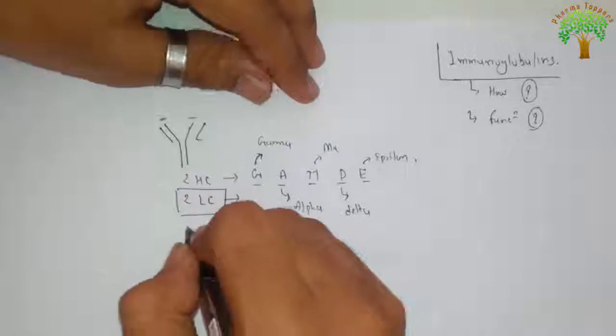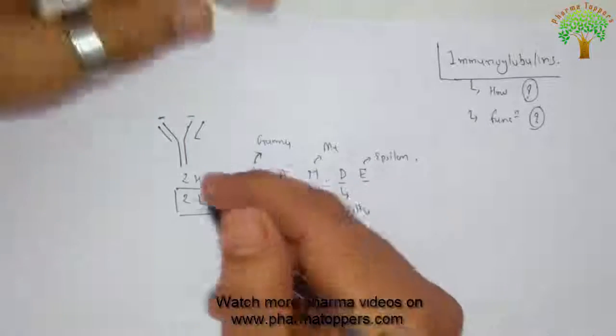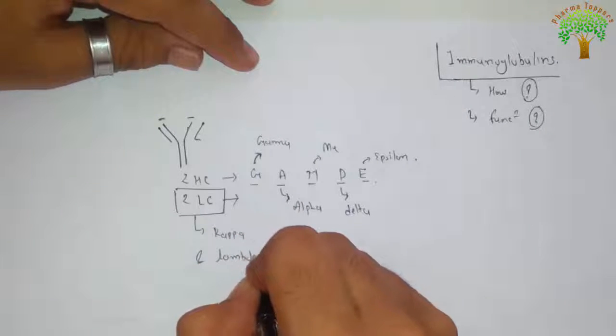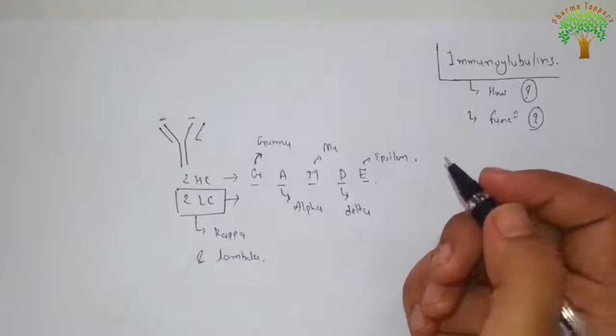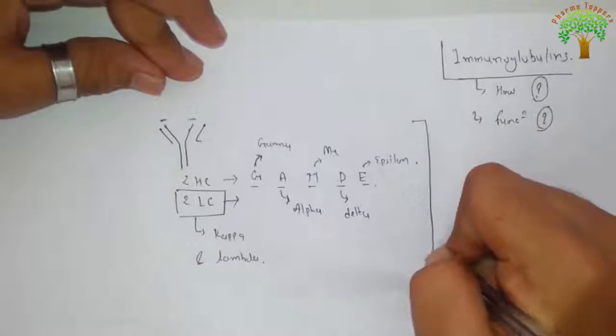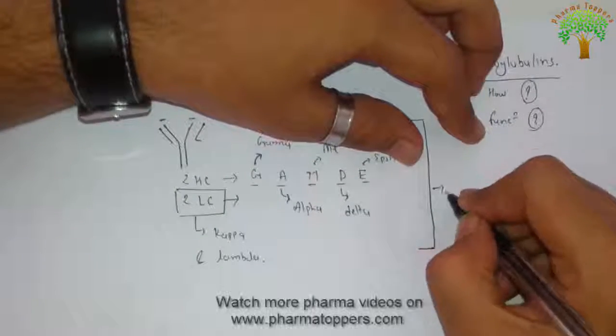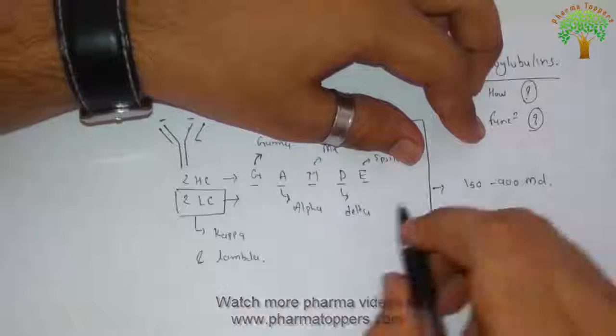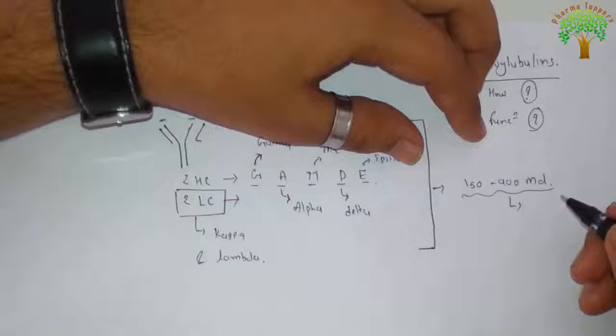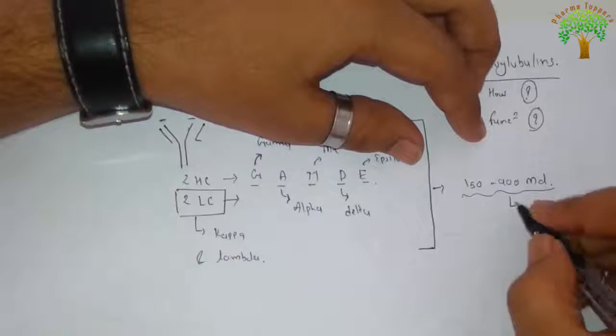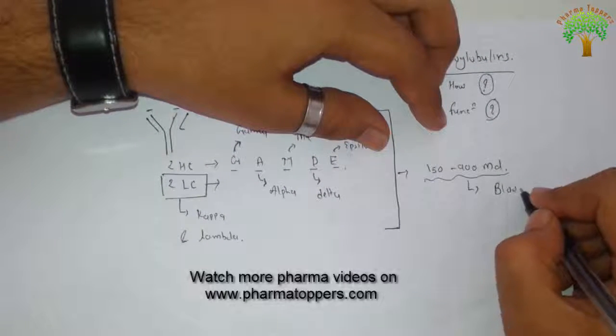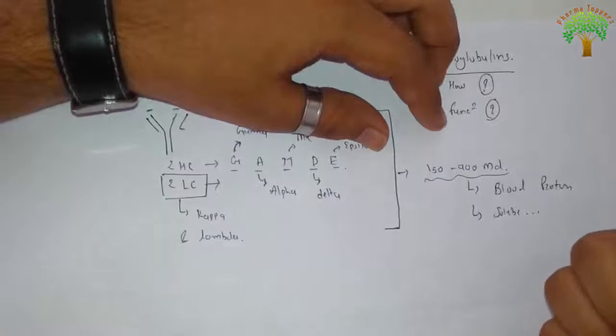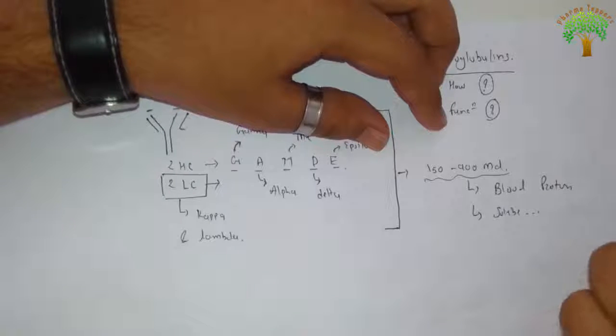Now on the basis of light chain, it is mainly classified as the kappa light chain and the lambda light chain. These are the two types. Generally regarding these immunoglobulins, the molecular weight is around 150 to 900 kD. This constitutes part of the blood proteins, and they are soluble.